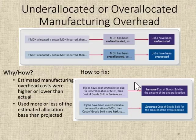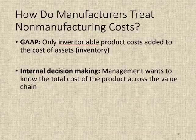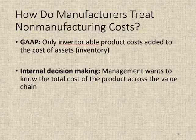Both situations will require the appropriate journal entry. Now, how do manufacturers treat non-manufacturing costs? GAAP says only inventoriable product costs are added to the cost of assets. Costs incurred in other elements of the value chain — our period costs, not our product costs — are not assigned to products for external financial reporting, but instead are treated as operating expenses.